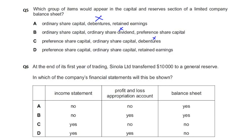Preference share capital, ordinary share capital, retained earnings, and general reserve — these are the items that can appear. So through the answer.